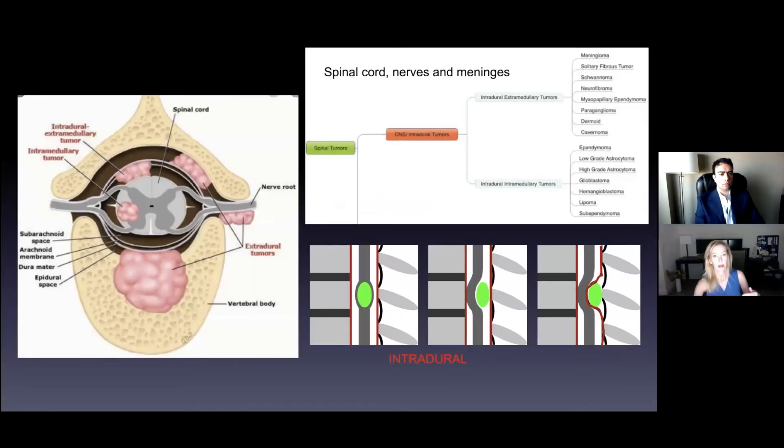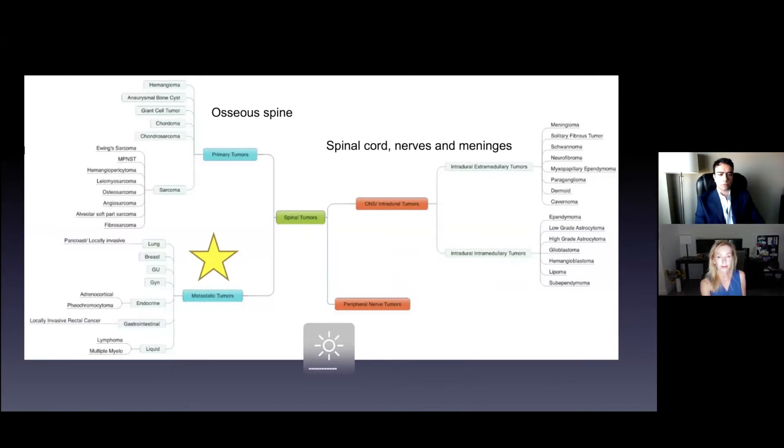This is the most common spine tumors right here, this nice picture that I found. So you can see you have osseous spine tumors on this side - primary bone tumors, extremely rare. Metastatic disease, 80 to 95%. So this is what everybody's going to see.